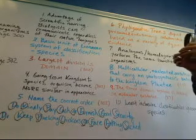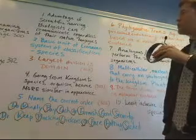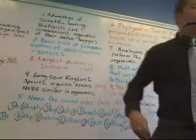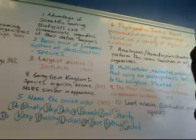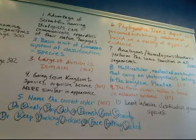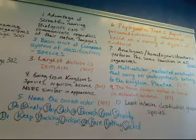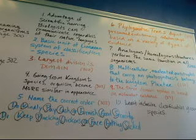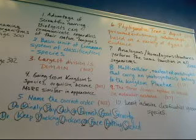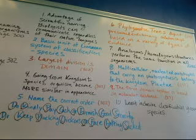But let's look at some of the first topic you'll see. The advantage of scientific naming, biologists can communicate regardless of their native languages. So we talked about the Linnaean system. And Linnaeus came up with this system that uses primarily Latin nomenclature or naming systems to identify organisms in an international manner so that no matter where the person is from, no matter what country or language they speak, they can figure out what organism it is based on that system. So what's the advantage? Biologists can communicate regardless of their native languages. This is on page 300.